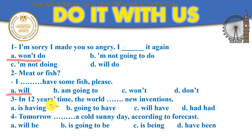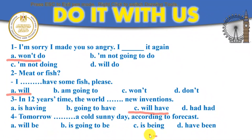In 12 years, more inventions will be invented, of course. We have qualified scientists who are going to invent other inventions. So in 12 years time, the world will have — and number four: tomorrow will be a cold, sunny day according to the forecast. Here I am telling you about the future but with no evidence — so it will be. That's a prediction.